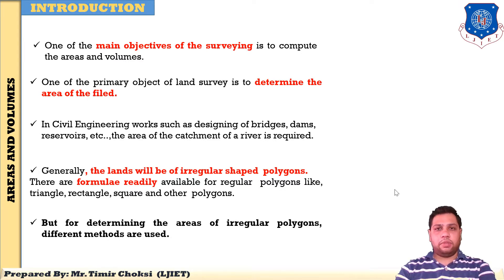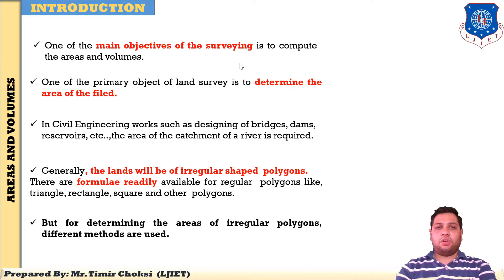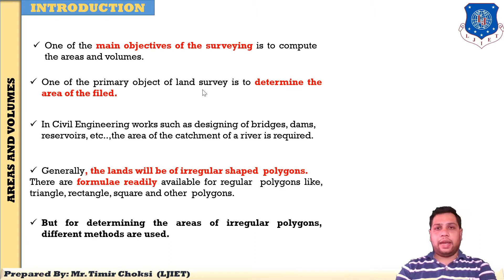In surveying, different types of surveys are conducted on a field — like tachometer, plane table, and theodolite. After conducting that survey, the next task is to find the area of the particular field. One of the main objectives of surveying is to compute the area and volume. One of the primary objects of land survey is to determine the area of the field — whether you are constructing a road, canal, or reservoir.